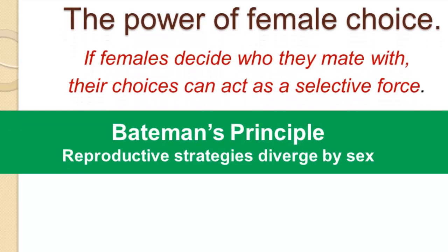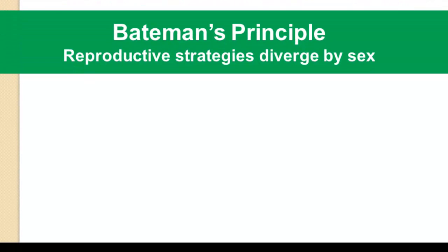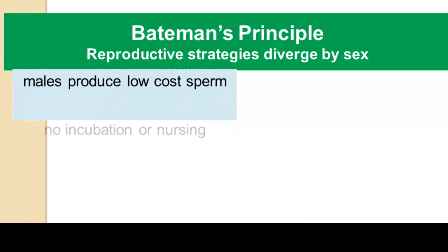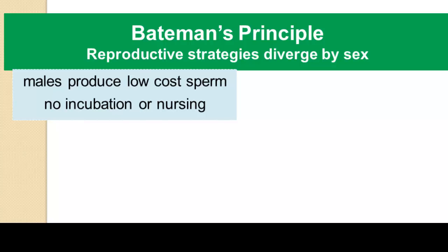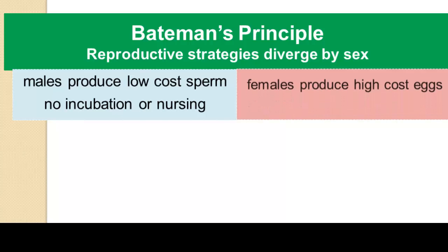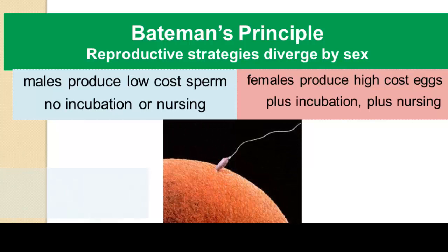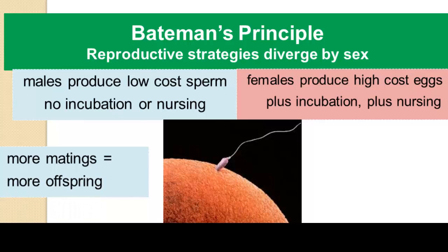In relation to female choice, what's called Bateman's principle points out that reproductive strategies should diverge by sex. Bateman's reasoning was that males produce low-cost sperm and incur very few of the costs of reproduction, whereas females produce very high-cost eggs plus incubation plus nursing. Given the low cost of sperm, more matings for males will lead to more offspring, so males should seek as many matings as possible.